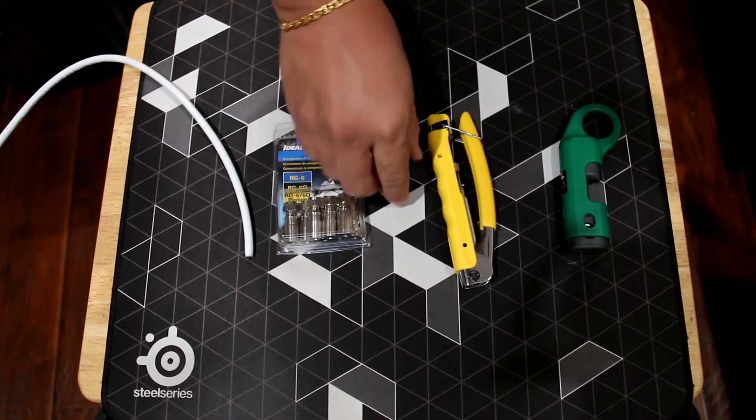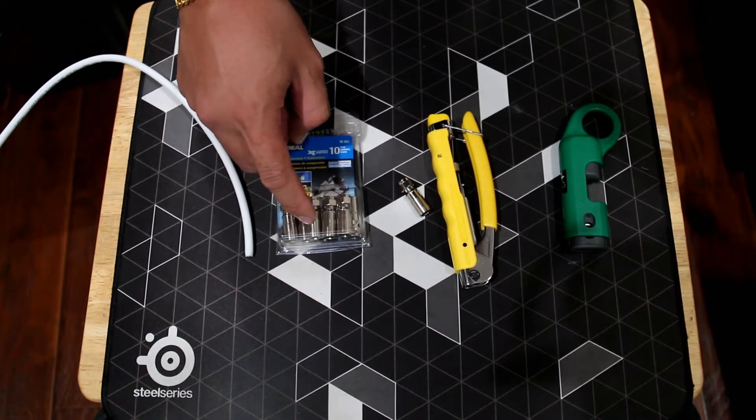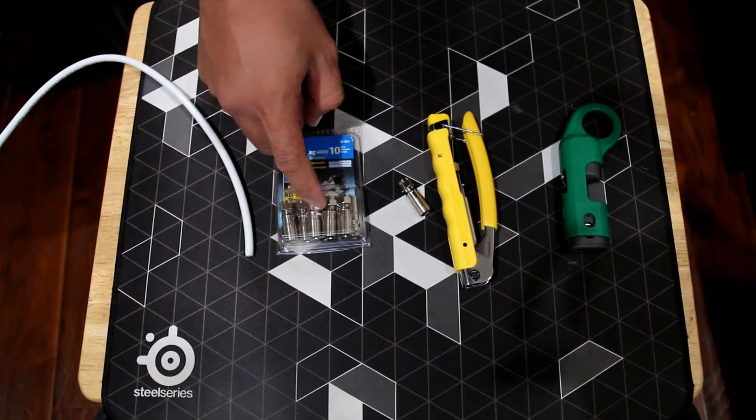Third, you need F connectors like this. You can buy a box of 10 for $3 or $4 or pairs for a dollar.